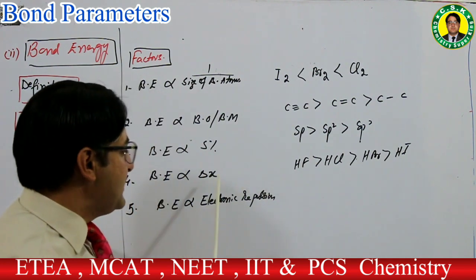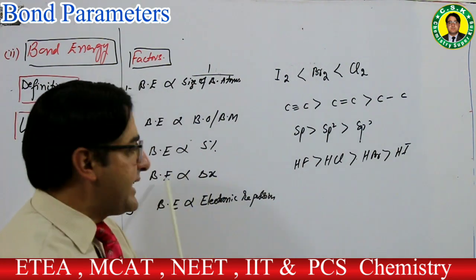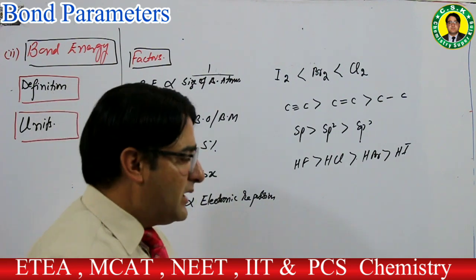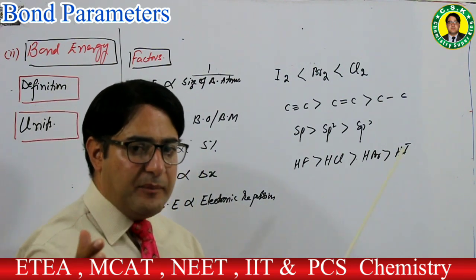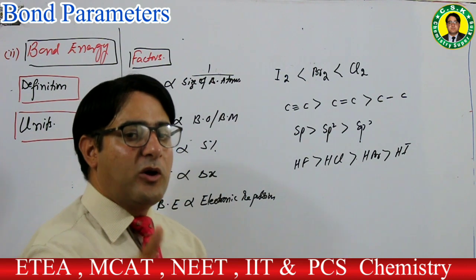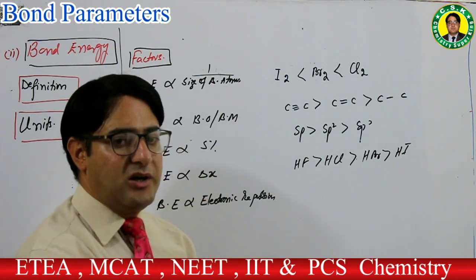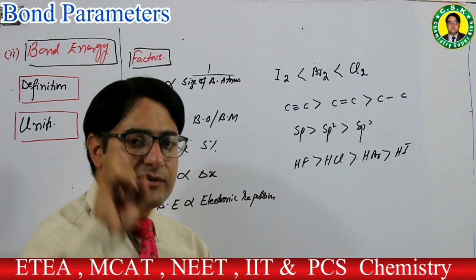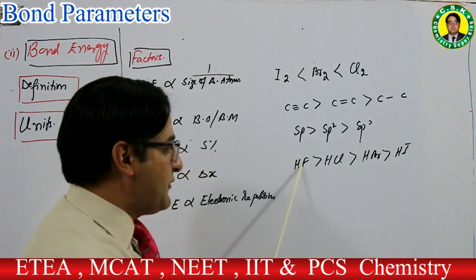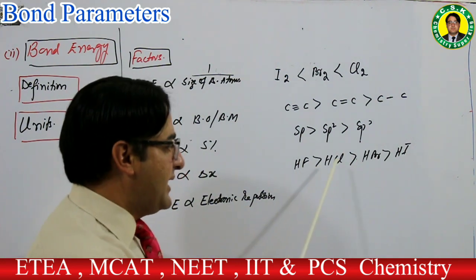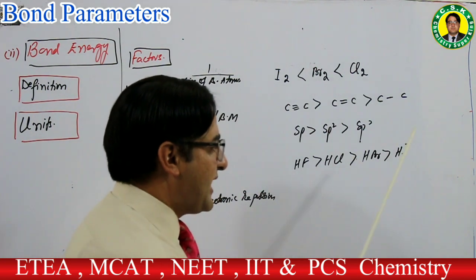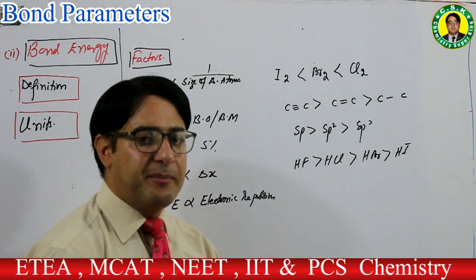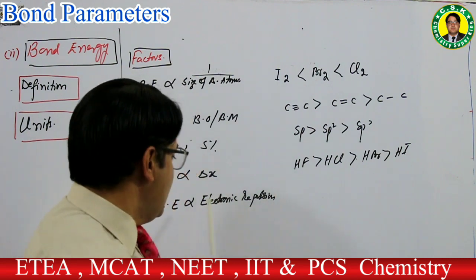Bond energy اور electronegativity difference کا direct relation ہے — electronegativity کا فرق زیادہ ہوگا تو bond زیادہ polar ہوگا، polar bond strong ہوتا ہے، bond energy زیادہ ہوتی ہے۔ HF bond energy is greater than HCl, which is greater than HBr, which is greater than HI.